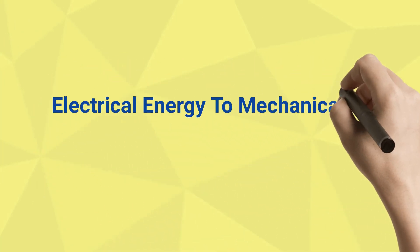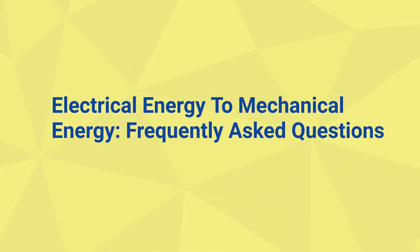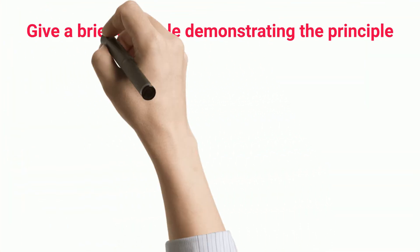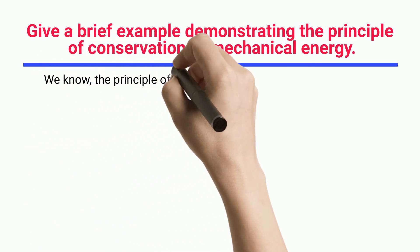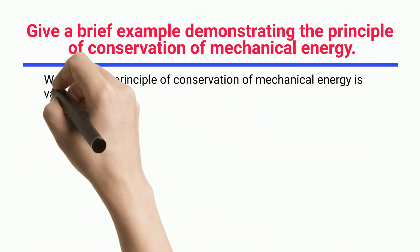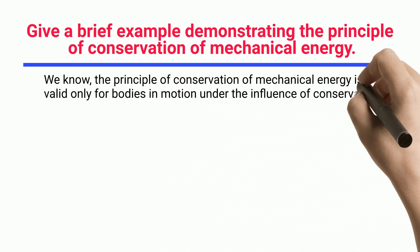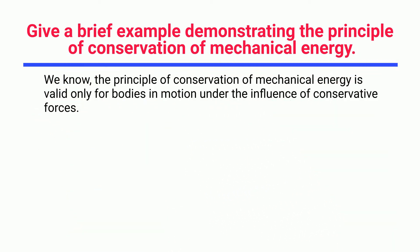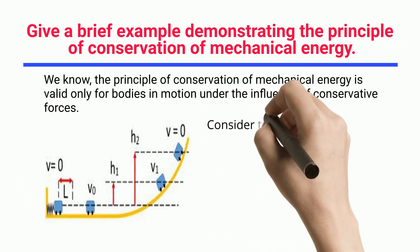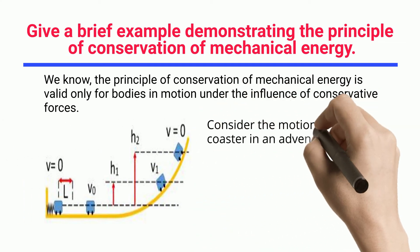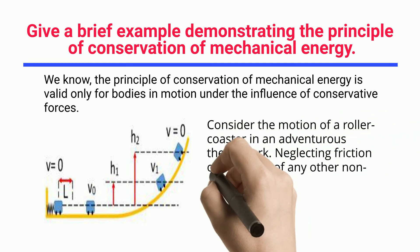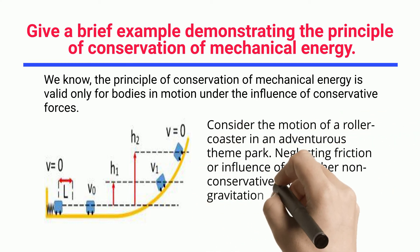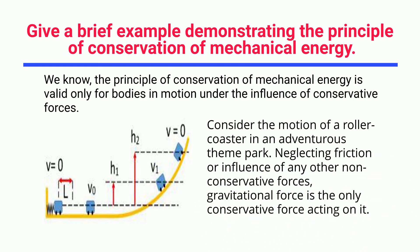Frequently asked questions on electrical energy to mechanical energy. Give a brief example demonstrating the Principle of Conservation of Mechanical Energy. The principle of conservation of mechanical energy is valid only for bodies in motion under the influence of conservative forces. Consider the motion of a roller coaster in an adventurous theme park. Neglecting friction or influence of any other non-conservative forces, gravitational force is the only conservative force acting on it.